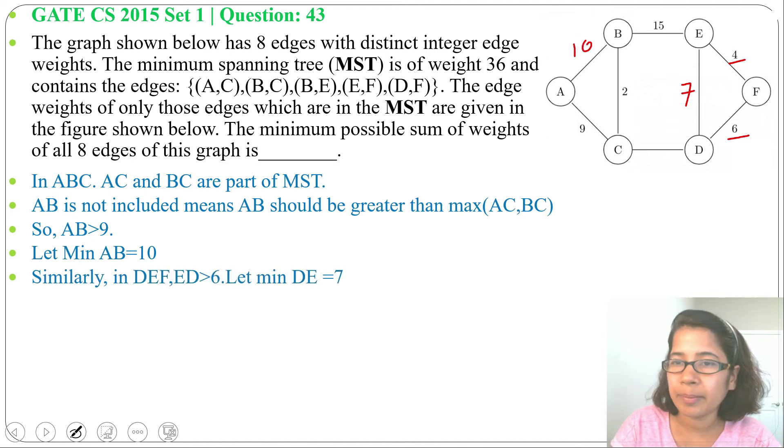Next consider BCDE. So in this BCDE cycle maximum weight is 15. So this CD value should be greater than 15. So let it be 16.